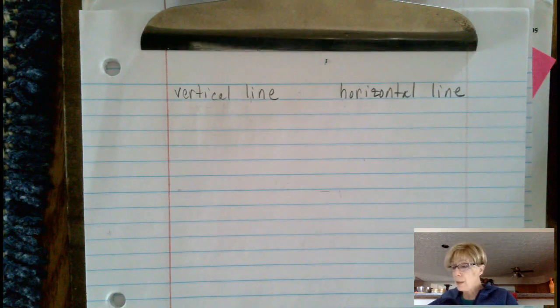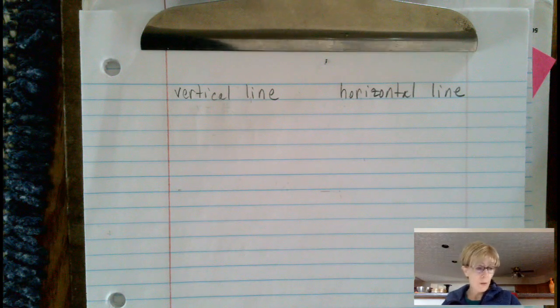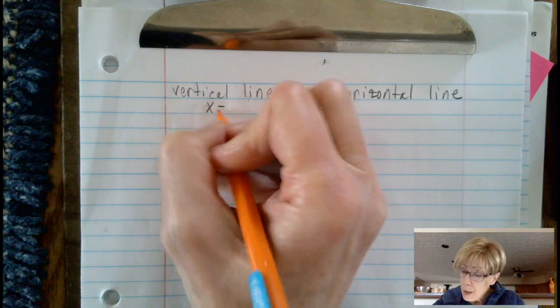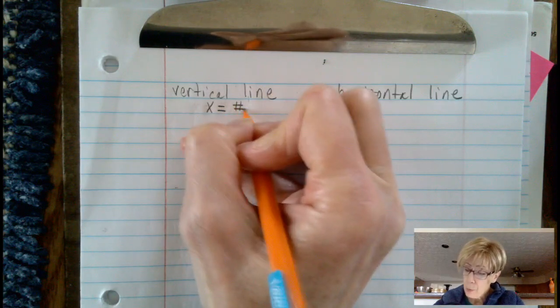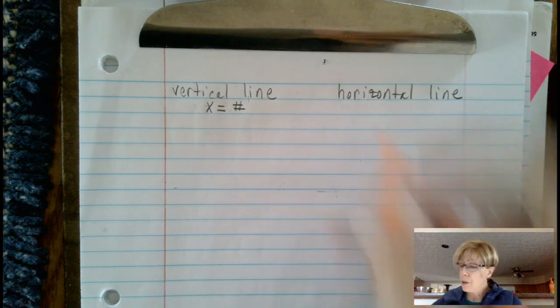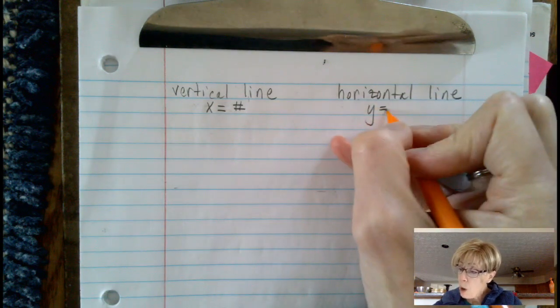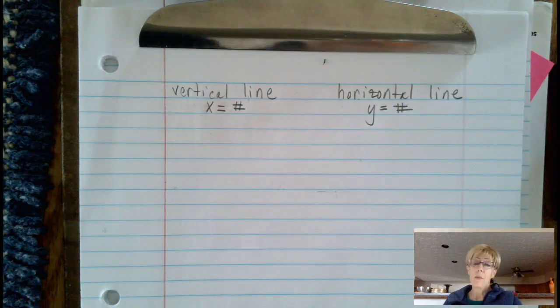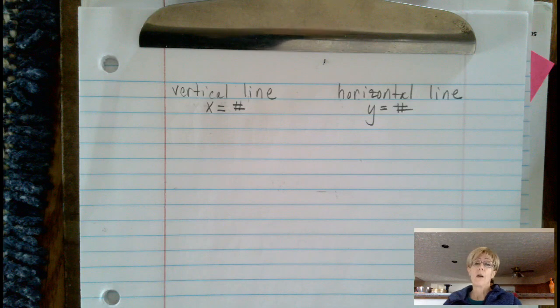The equation of a vertical line is going to be in the form of x equals some number. And the equation of a horizontal line is always going to be y equals some number. So that might be something that you want to add in as a reference on the side of your computer when you're working.